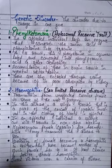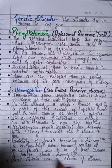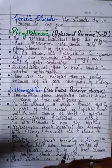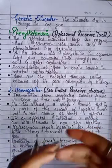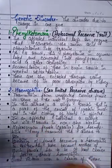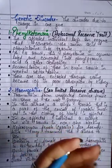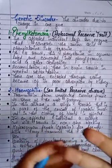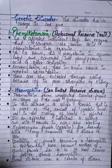Hello friends, we are doing Chapter: Principles of Inheritance and Variation. In the last video we studied linkage and recombination, polygenic inheritance, sex determination in humans and honeybee, male heterogamety, female heterogamety, mutation, and pedigree analysis. That was part 4 of this chapter.